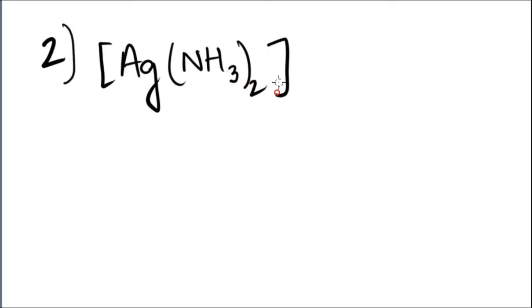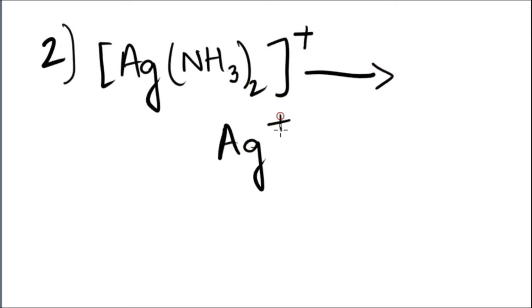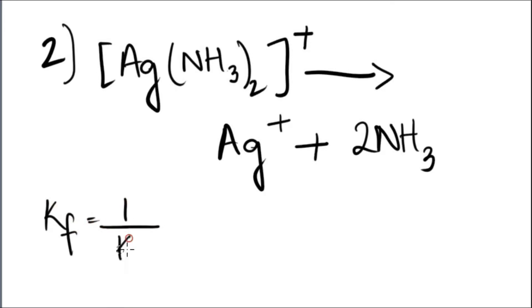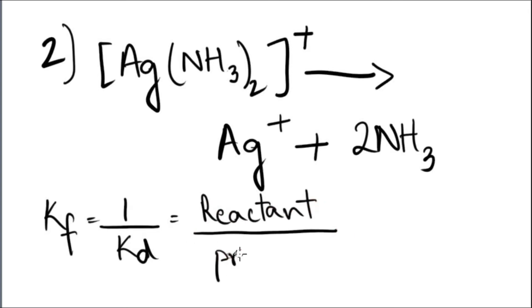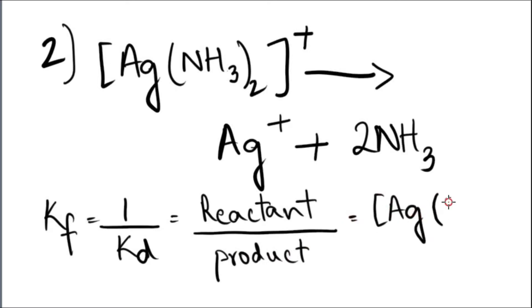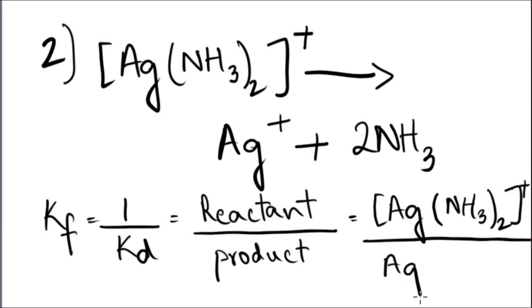For the second question, you had to draw the reaction and show Kf, which is the formation constant. You see that silver and ammonia form a coordination compound. They dissociate into silver ion and ammonia, which is a neutral molecule with no charge. Kf is 1 over Kd, which equals reactant over product — the compound on the left side of the arrow over the compound on the right side.